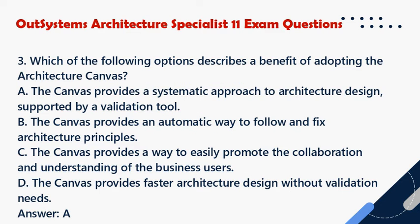Question 3. Which of the following options describes a benefit of adopting the Architecture Canvas? a. The Canvas provides a systematic approach to architecture design, supported by a validation tool. b. The Canvas provides an automatic way to follow and fix architecture principles. c. The Canvas provides a way to easily promote the collaboration and understanding of the business users. d. The Canvas provides faster architecture design without validation needs. Answer: A.